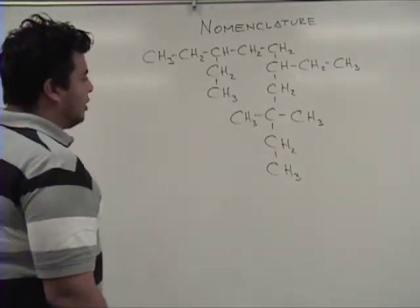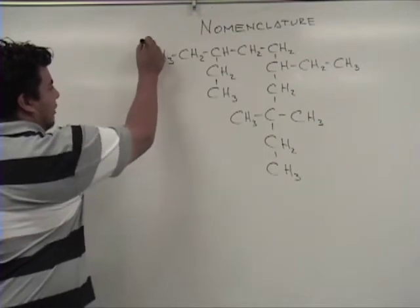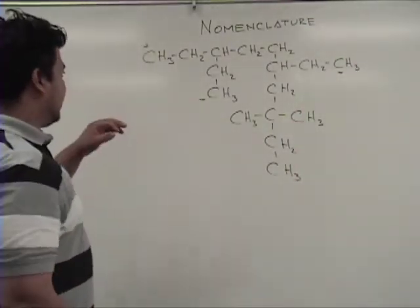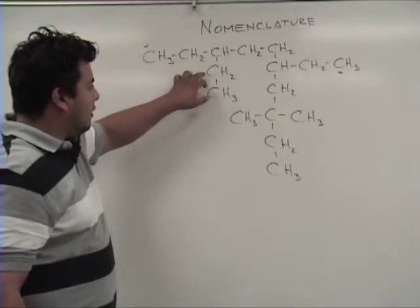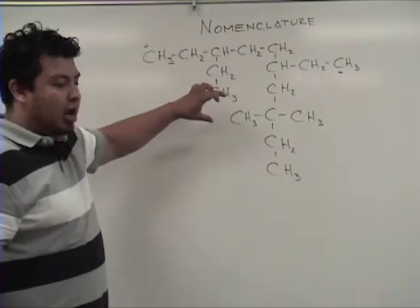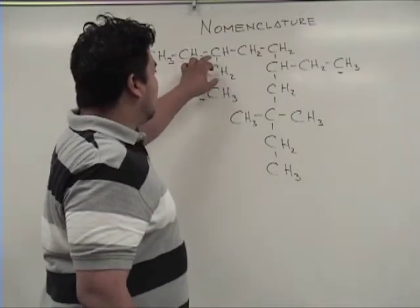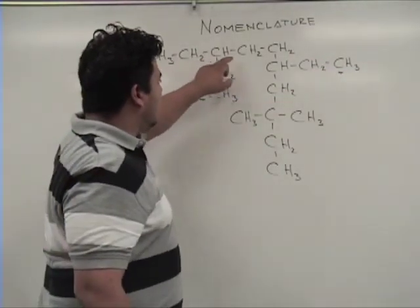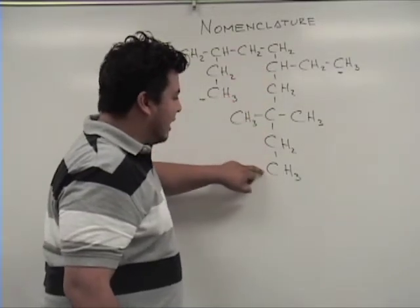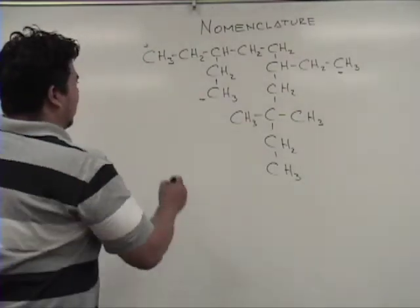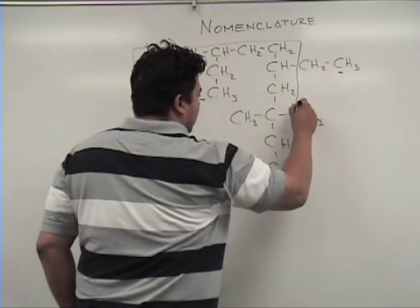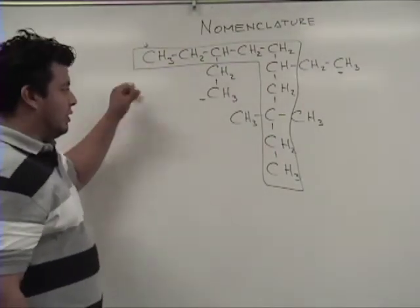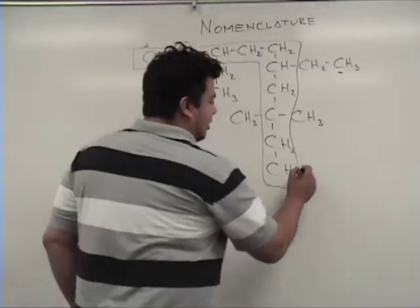Your longest chain of carbons has to start on one of the end carbons — it has to start from the end of a chain. Let's say we count: one, two, three, four, five — so this chain has five carbons. Let's see if we have another one: one, two, three, four, five, six, seven, eight — this one has eight carbons. Now let's see this one: one, two, three, four, five, six, seven, eight, nine, ten — this one should be your longest chain of carbons, so you're going to box it. That's your parent chain, and we know from the Greek prefixes that this is a decane.